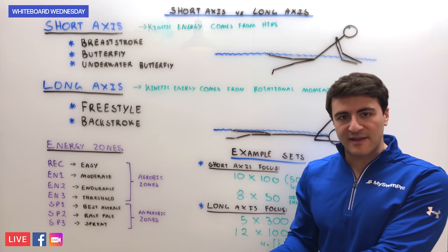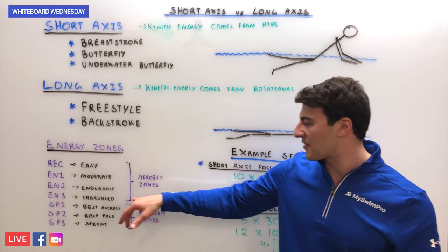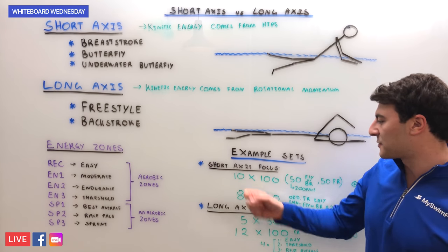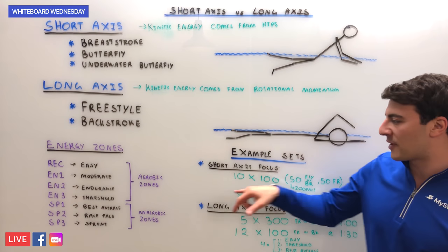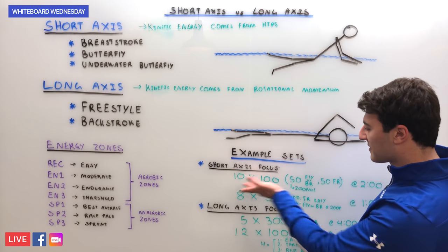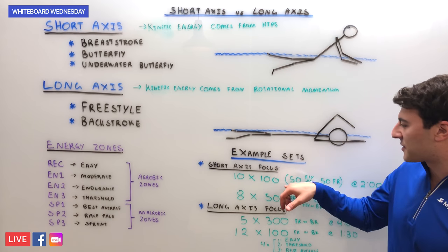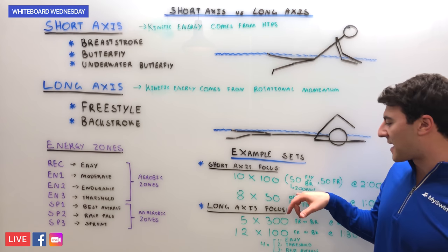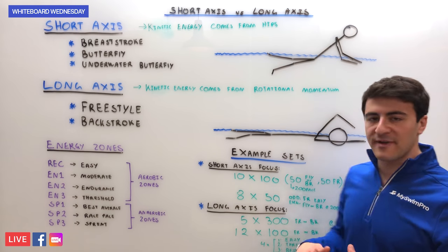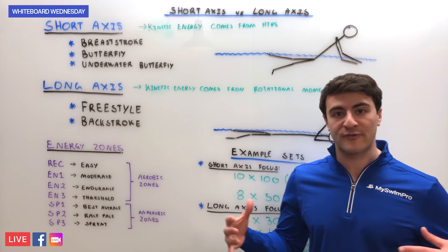Compare that to a long axis training set: 5x300s freestyle or backstroke in the threshold or endurance zone — so you're in the aerobic zone to get a similar training emphasis. To clarify, it's not necessarily the exact same training effect doing 10x100s versus 5x300s, but the goal is different: for short axis strokes, you need to focus on 200 or 100 pace — performing at speed — or alternatively it's very technique-focused, swimming in the moderate zone with perfect technique.